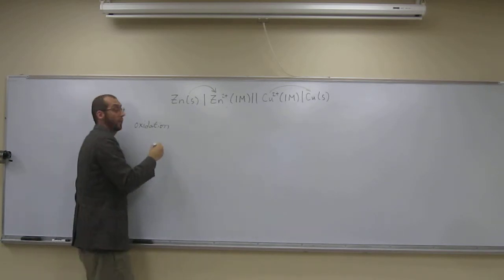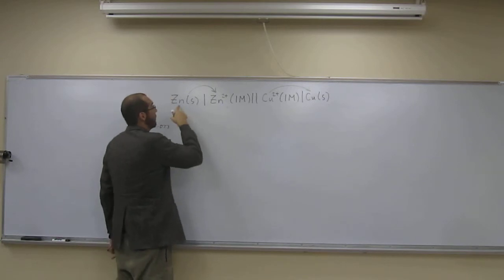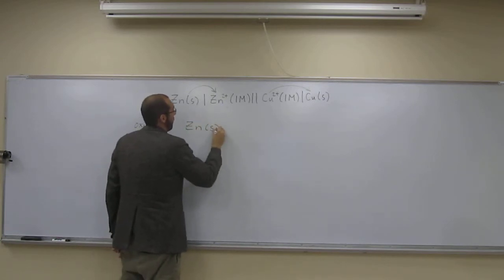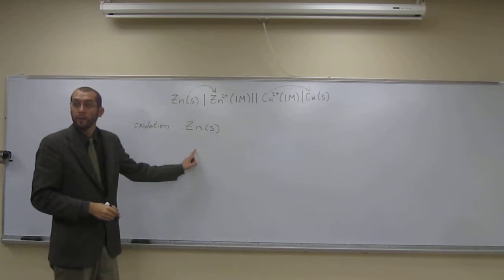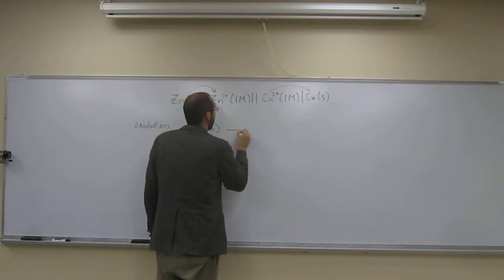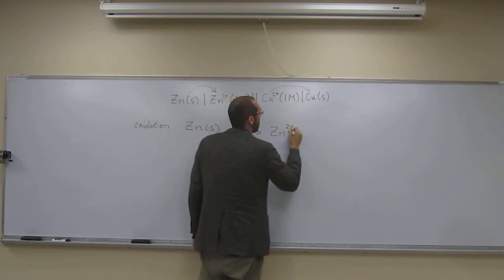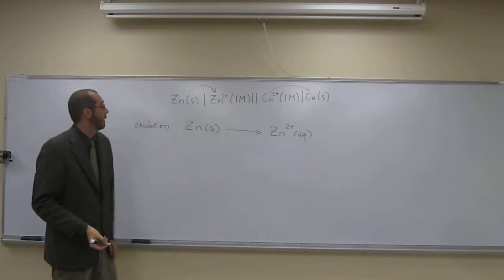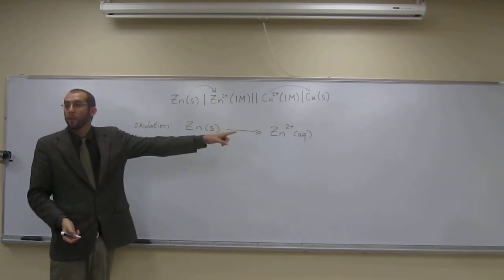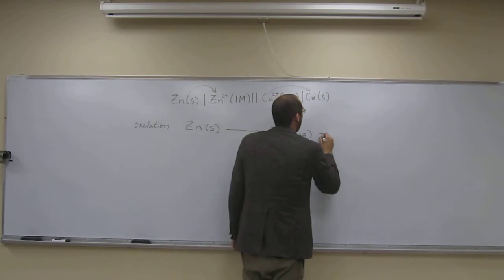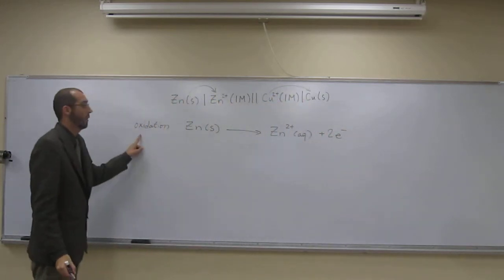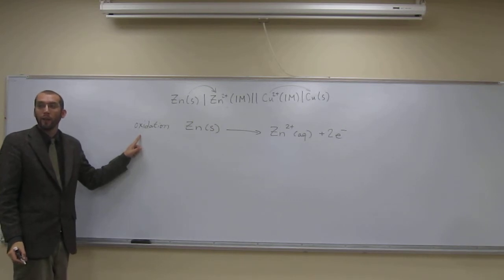So zinc solid is losing electrons to become Zn²⁺ aqueous. How many electrons did it lose? Two. So that's the oxidation half reaction: Zn(s) → Zn²⁺(aq) + 2e⁻.